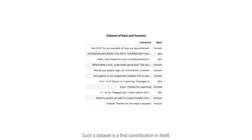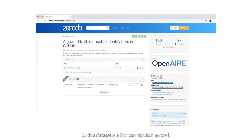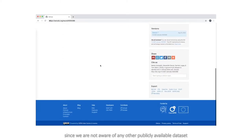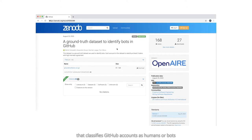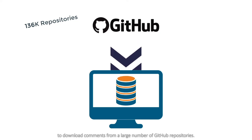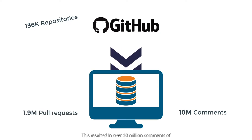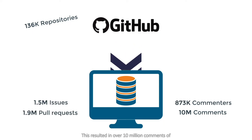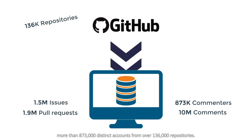Such a dataset is a first contribution in itself, since we are not aware of any other publicly available dataset that classifies GitHub accounts as humans or bots on the basis of their commenting activity. To create this ground truth dataset, we used the GitHub API to download comments from a large number of GitHub repositories. This resulted in over 10 million comments from more than 873,000 distinct accounts across over 136,000 repositories.